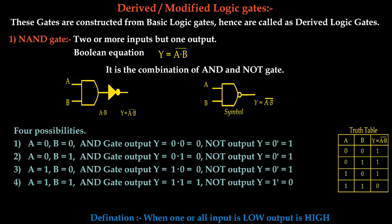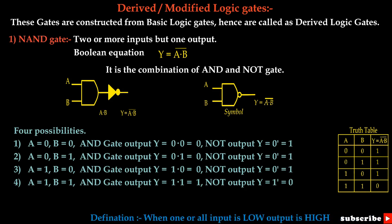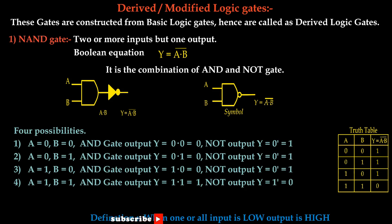The AND gate is connected first and then the NOT gate is connected, as shown by the symbol. With binary levels applied, there are four possible combinations. If both inputs are 0, their multiplication is done by the AND gate: 0 multiplied by 0 is 0, and this 0 is inverted by the NOT gate, so the output will be 1. In the second case, if one input is 0 and one is high, the AND gate gives 0 output, and again this 0 is complemented by the NOT gate, so the output will be 1.